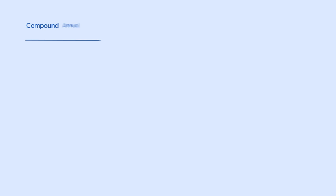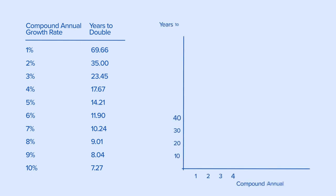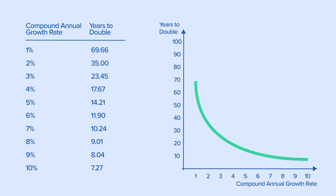This table shows the years to double based on annual compounding rates ranging from 1% to 10%. Here is a chart that illustrates the relationship, with the vertical scale from 70 years down to around 7 years.